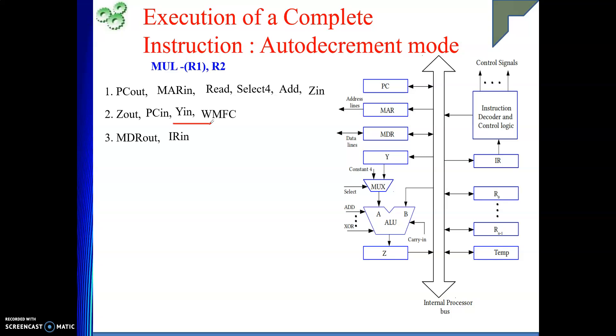Now, my instruction is in IR. Now, we will proceed with the getting operand from memory. Can I give R1 to MAR directly? No, not at all. First I need to decrement R1. Who will do the decrement? ALU will do the decrement. We need to get the operand of R1 into one of the input of the ALU. Then another input will come from the mux that is 4. Then we will perform sub operation. Decrement means subtraction.